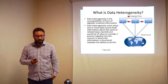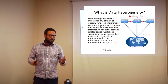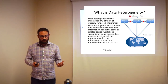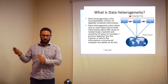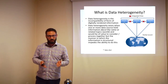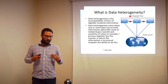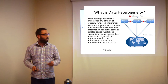I've also written here that data heterogeneity exists when one or more data sources hold information about the same or related topics and would be of value to consider and process together, but the manner in which they are structured impedes the ability to do this. It's fine for two data structures to be incompatible if they're not talking about the same thing, but if you have multiple data sources — an Excel, an Access, a library catalog — giving you data about the same research topic and you want to process that information efficiently and consistently, then the data heterogeneity is a problem.